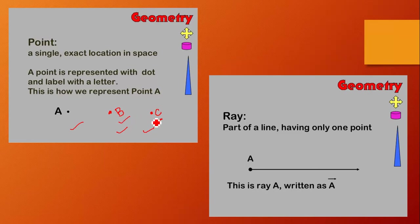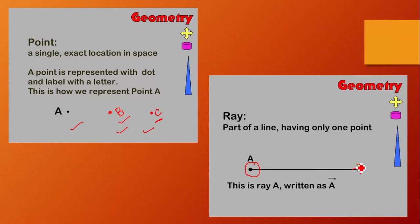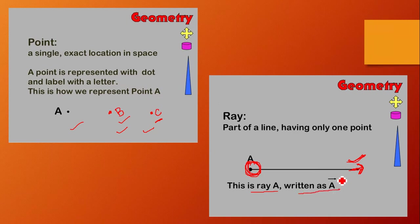Next, a ray is part of a line having only one fixed point. From the other side it may be extended — that is the limitation of a ray. From one side only we can extend it, and the other side is a fixed place.